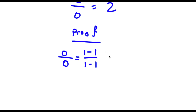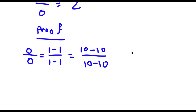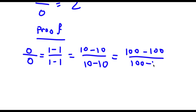Now this is the same thing as 10 minus 10 — anything minus itself is going to equal 0 — so this is the same thing as 10 minus 10 over 10 minus 10. And now this is the same thing as 100 minus 100 over 100 minus 100, since anything minus itself is equal to 0.